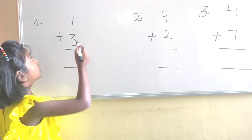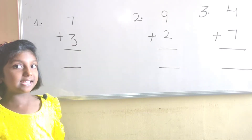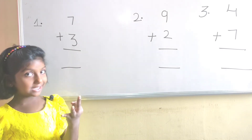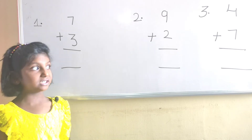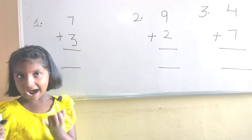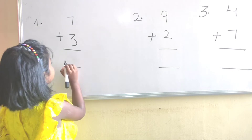Let us see the first numbers: 7 and 3. 7 in mind, 3 in hand. 7, after 8, 9, 10. The answer is 10.